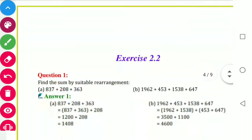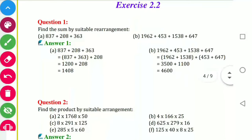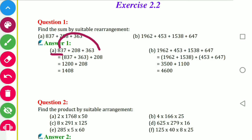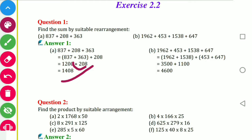Now Exercise 2.2: find the sum by suitable rearrangement. Given 873, 208, and 363 — we arrange suitably. 837 plus 363 gives 1200, then 1200 plus 208 gives the answer 1408.